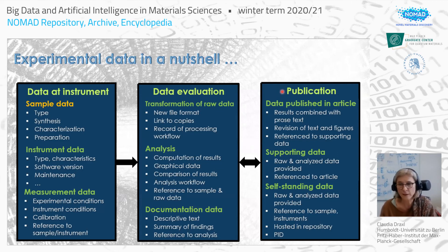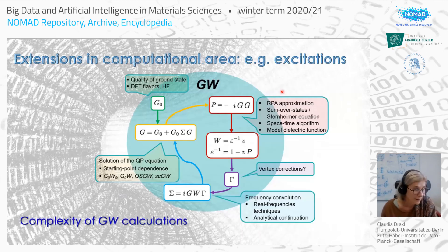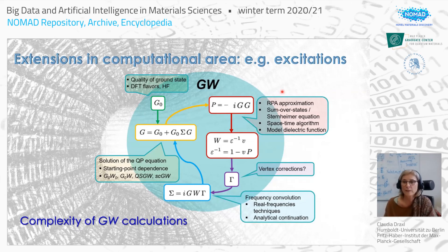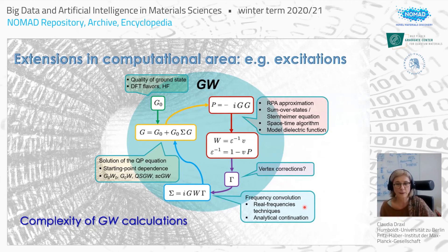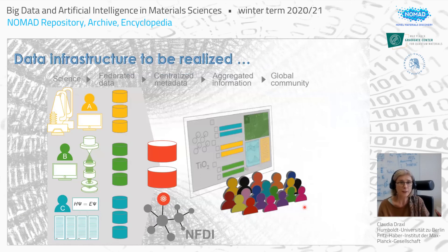Even in theory, not everything is settled. For excitation processes, the GW approach of many-body perturbation theory involves a complex process to compute the self-energy. At each step you must decide which algorithms and approximations to employ, giving a huge amount of challenges in terms of data variety and veracity — and dealing with the complexity of different implementations across different codes.